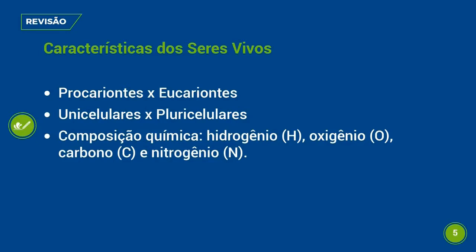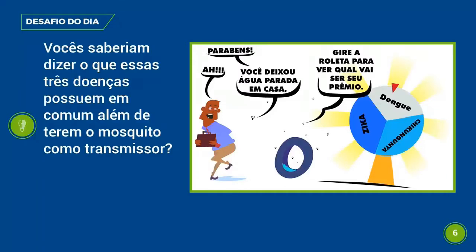Temos bastante água no nosso corpo e também os sais minerais. Depois desse resumo da aula da professora Sabrina, vamos ao desafio do dia. Temos uma imagem com uma roleta onde tem Zika, Dengue e Chikungunya. Vocês saberiam dizer o que essas três doenças possuem em comum, além de terem o mosquito como transmissor? No final da aula, tenho certeza que vocês saberão. Vamos iniciar nossa aula sobre vírus.